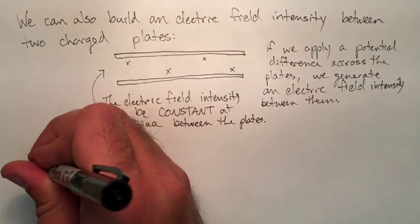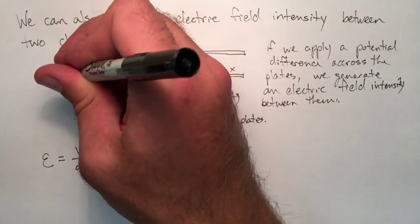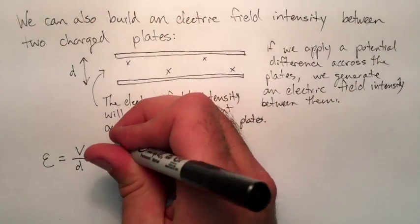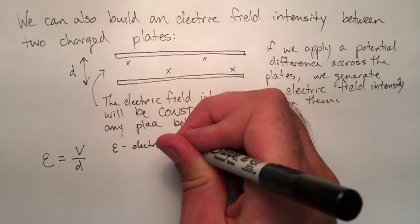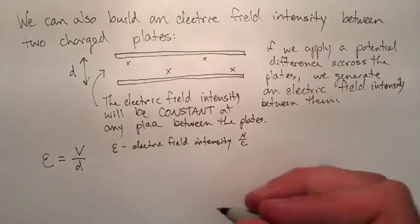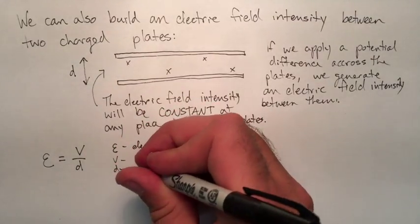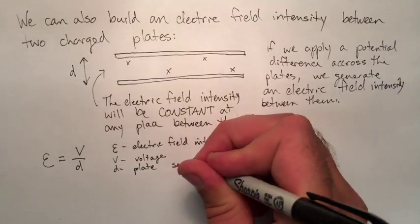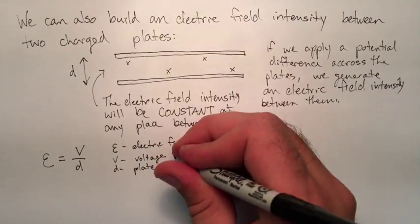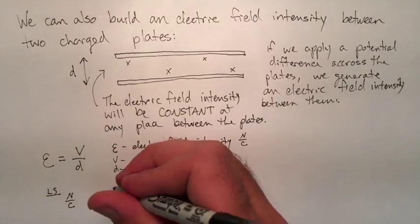So actually to calculate that intensity, eta here is going to be equal to the voltage on those plates divided by their separation, which we're going to call d. So eta again is electric field intensity in newtons per coulomb. V is the voltage that would be placed on those plates in volts. And d would be the separation distance, so the distance between those plates. And that would be in meters.